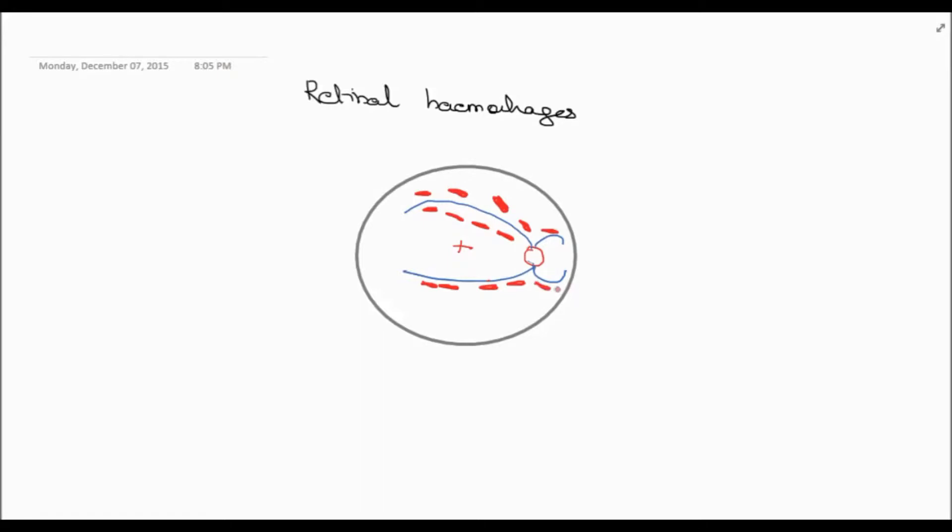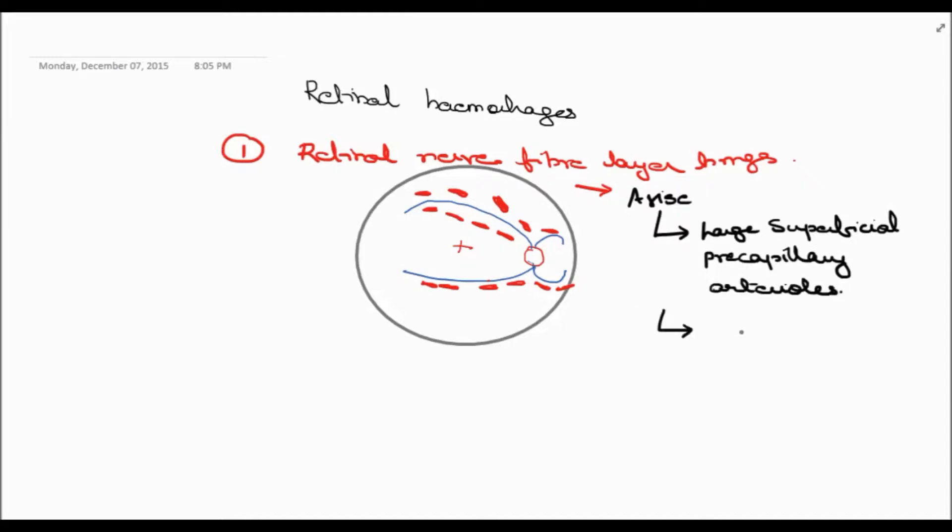The first one usually occurs along the retinal nerve fiber layers and therefore is usually flame-shaped because of the architecture of the retinal nerve fiber layers. They arise from the larger superficial pre-capillary arterioles and are flame-shaped because of the architecture of the retinal nerve fibers which are arranged in that form.